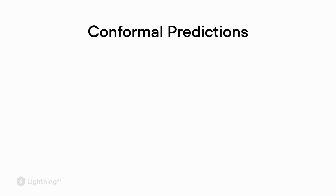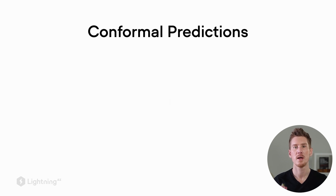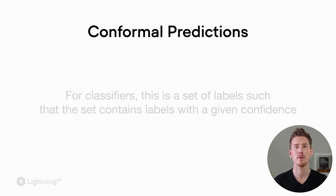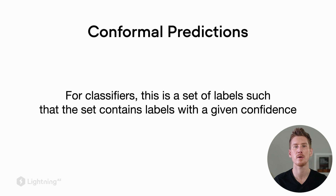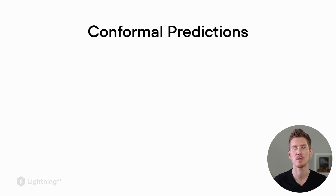In contrast, there is also the concept of conformal predictions. In conformal predictions we quantify the uncertainty of our model predictions themselves — not the accuracy, but the individual predictions. For classifiers, this is a set of labels such that the set contains labels with a given confidence.